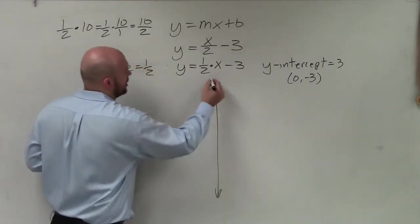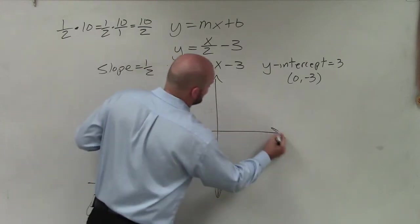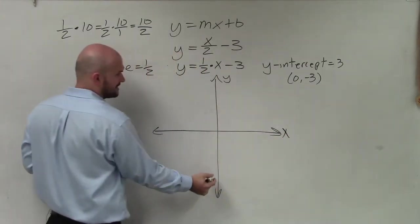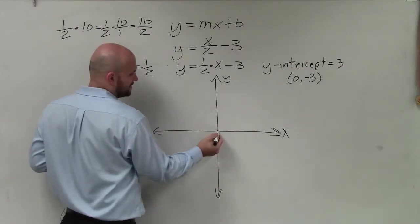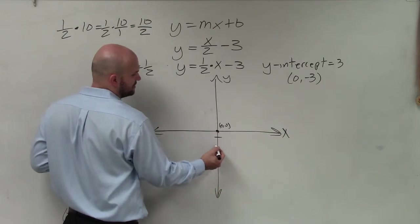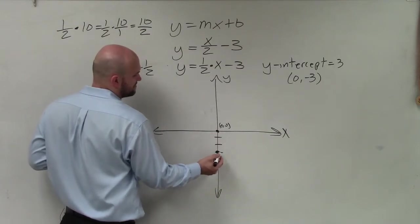Now, to simply graph this equation, all I'm going to do is first plot my y-intercept on the y-axis, which is my vertical axis here. So I have 0, negative 3. Remember, the origin is at 0, 0. So I'm not going to go left or right. I'm just going to go down three units, 1, 2, 3. And I make a nice big dot.